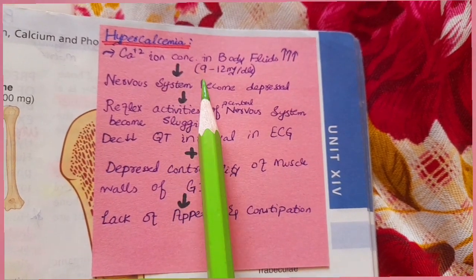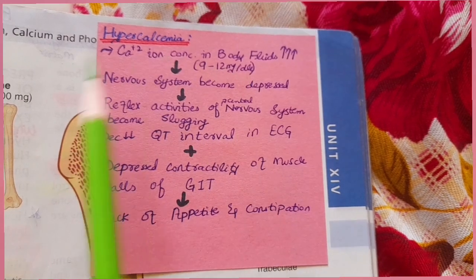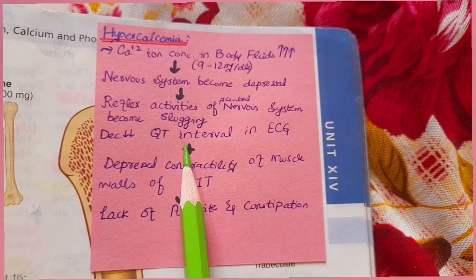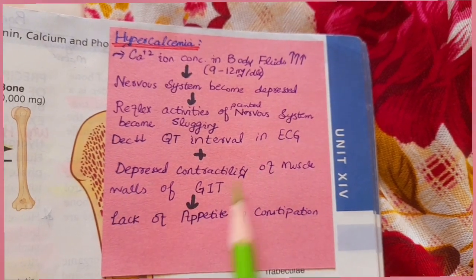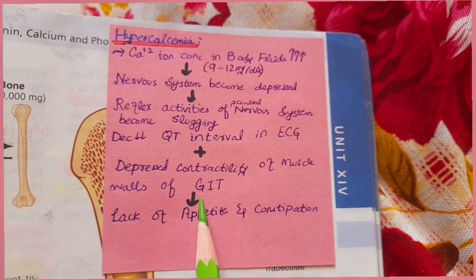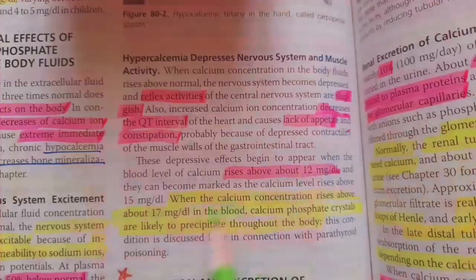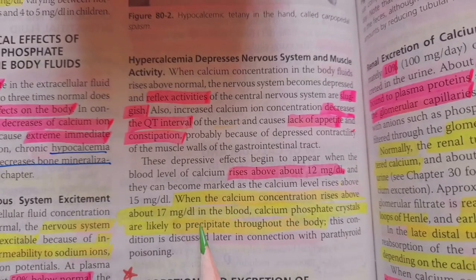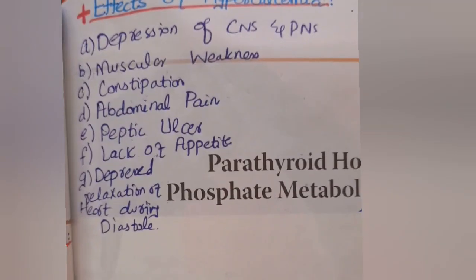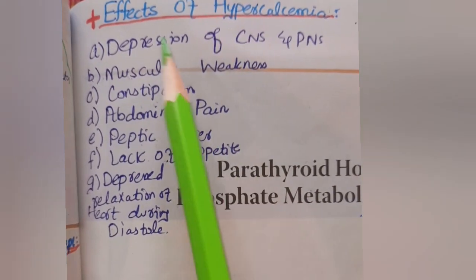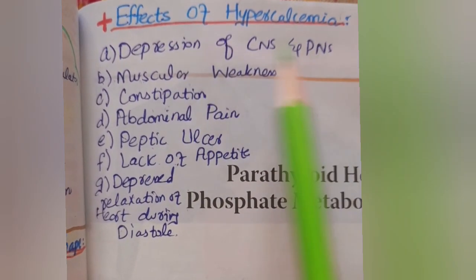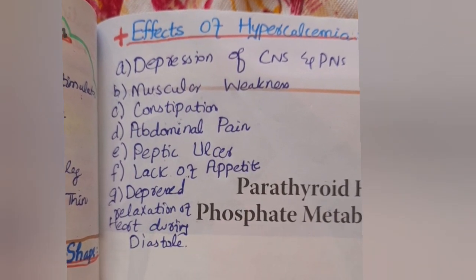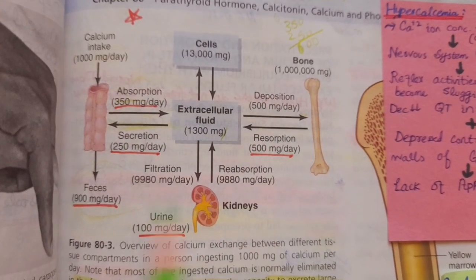In hypercalcemia, when calcium ion concentration rises above normal — approximately 9.4 to 12 mg/dL — the nervous system becomes depressed, reflex activities of the CNS become sluggish, the QT interval on ECG decreases, and muscle contractility is depressed. Decreased contractility of GI tract muscle walls results in lack of appetite and constipation. When calcium rises above 17 mg/dL, calcium phosphate crystals are likely to precipitate throughout the body. Summary of hypercalcemia effects: CNS and peripheral nervous system depression, muscular weakness, constipation, abdominal pain, peptic ulcer, lack of appetite, and depressed relaxation of the heart during diastole.